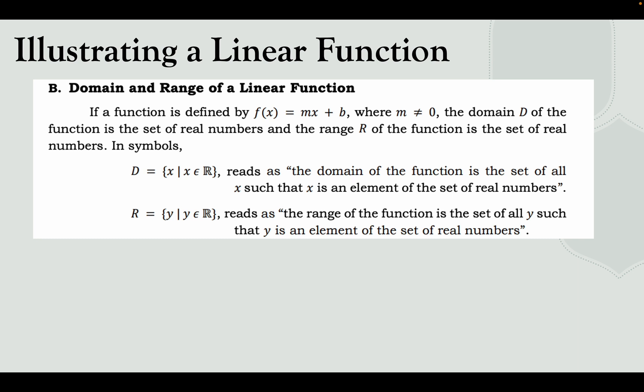The domain is the set of all x such that x is an element of the real numbers, and the range is the set of all y such that y is an element of the real numbers. Real numbers include rational numbers — natural numbers, whole numbers, integers, and terminating or repeating decimals — as well as irrational numbers, which are non-terminating and non-repeating decimals.